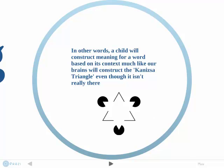In other words, a child will construct meaning for a word based on its context, much like our brains will construct the Kanizsa triangle even though it really isn't there. It is important to note that this construction of meaning, like the triangle, is a phenomenon occurring within the brain — it is not a part of the sensory input.